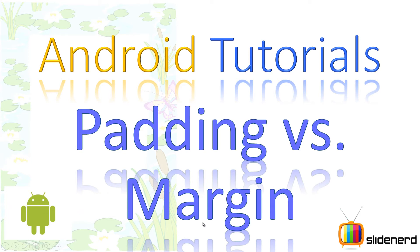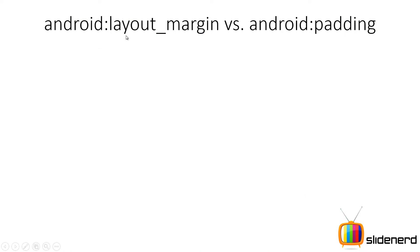Now if you guys are from a web development background, you probably know these words very well. So first we have two attributes: Android layout margin and Android padding. If you guys have seen my previous videos, I have used these values inside my calculator app and you are probably not clear about what I did back then. Let me show you what exactly happens with the padding and the margin.